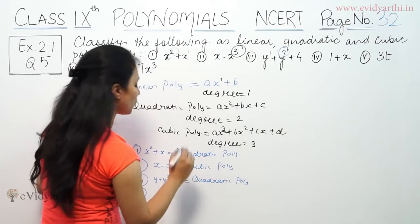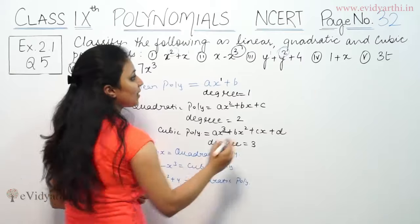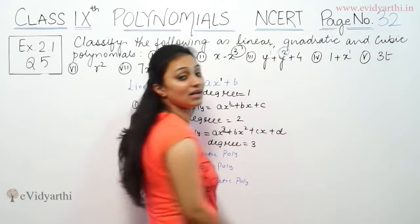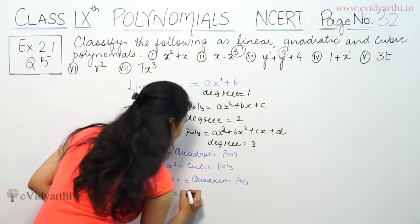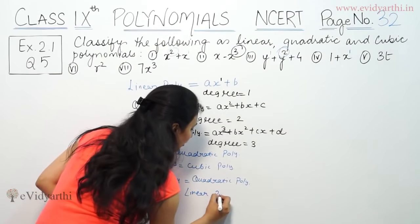Number 4 is 1 plus x. Now we have highest power is 1. So highest power is 1, degree is 1. That means it's a linear polynomial.